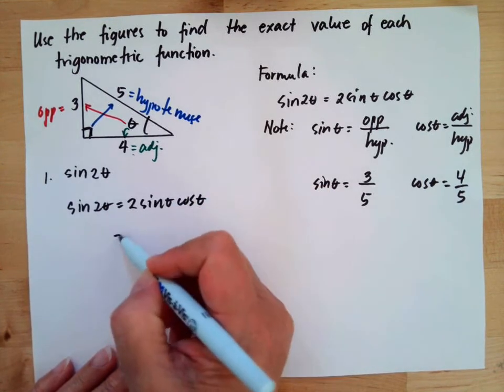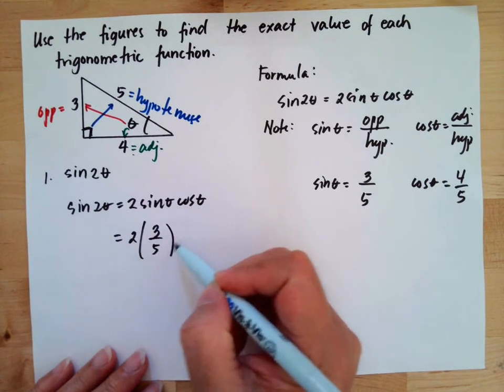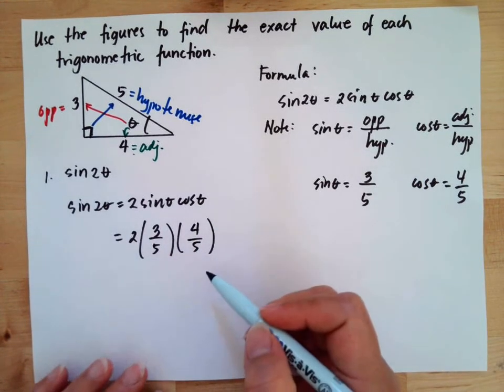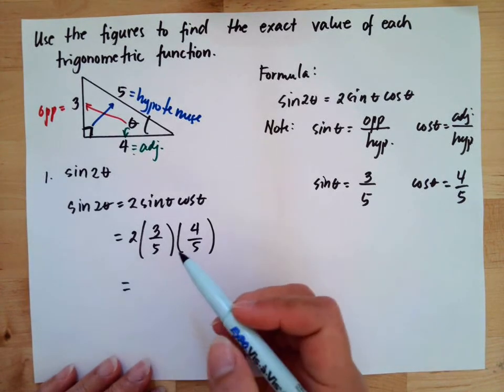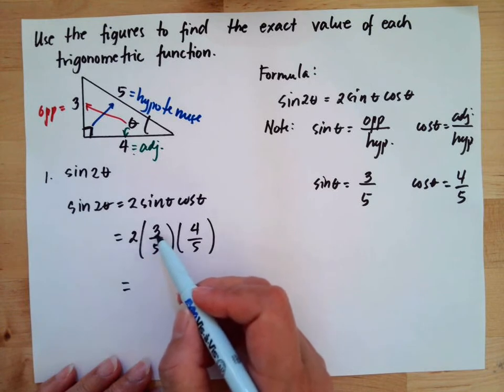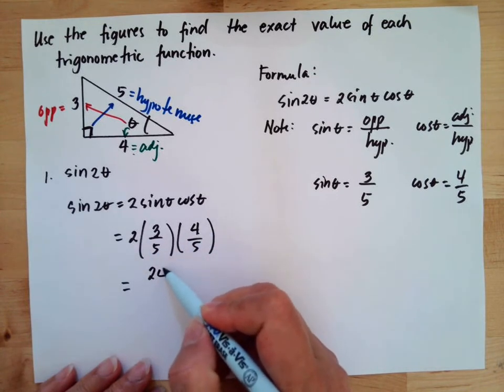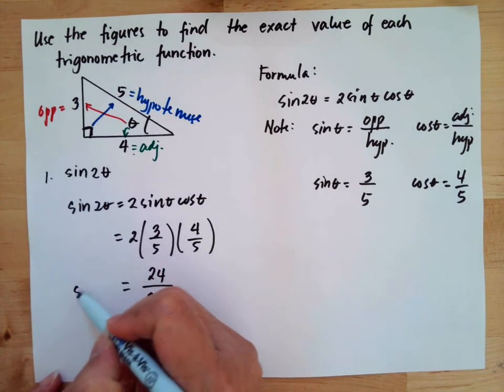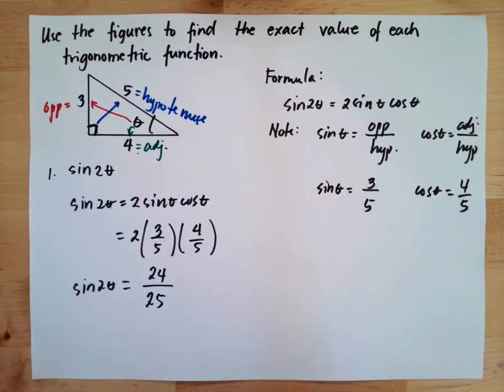We have 2 times sine theta, 3 over 5, times cosine theta, 4 over 5. Now multiply all the numerators and denominators: 2 multiplied by 3 is 6, 6 multiplied by 4 is 24, and 5 multiplied by 5 is 25. Therefore, sine 2 theta equals 24 over 25.